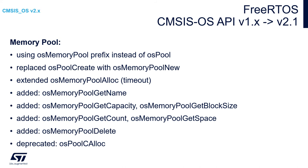There is also a change between CMSIS-OS API version 1 and version 2 concerning memory pool. We are now using the OS memory pool prefix instead of OS pool. Instead of the create function, we are using new, like in other components. There is extended OS memory pool allocation, and new functions added: pool get name, pool get capacity, pool get count, pool delete. The function OS pool c alloc has been removed.